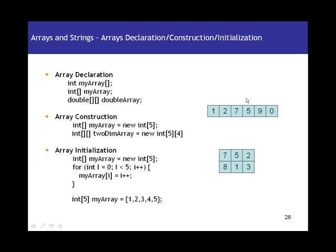Earlier we talked about the different data types in Java: integer, char, float, double, and all the other data types. We've also talked about strings, which is nothing but a group of characters clubbed together. In any of these data type declarations, how many values can you store at a time?